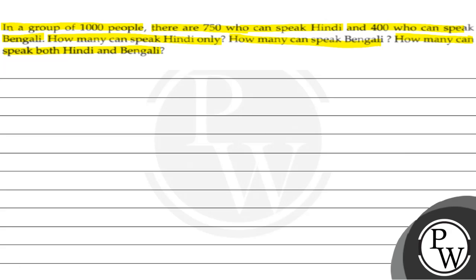So here we are going to use one of the key concepts. The key concept we use here is: N(A union B) is equal to N(A) plus N(B) minus N(A intersection B).